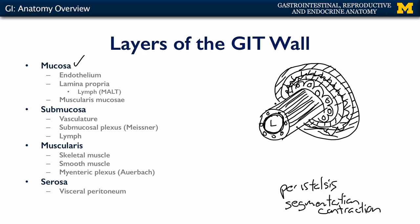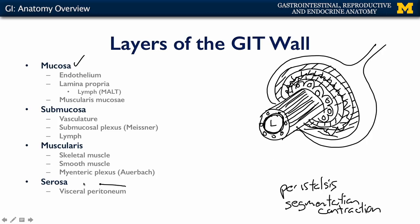And then finally, surrounding all of this is the serosa. The serosa is the visceral peritoneum that surrounds the gastrointestinal tract and other intraperitoneal organs, and it conducts the neurovasculature from the body to the gastrointestinal tract. Different portions of the gastrointestinal tract will have variations and specializations of these different layers — in particular, specializations of the mucosa and the muscularis — which we'll discuss as we cover each specific region.